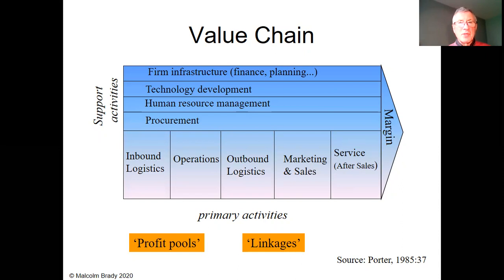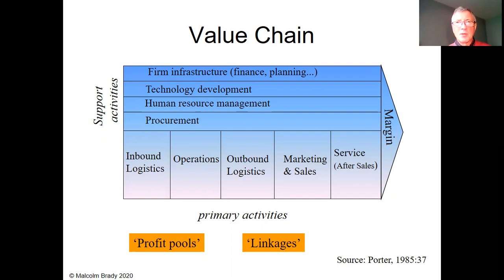So there are his support activities and his primary activities. He also mentions linkages — it's important to look not just at the individual sets of activities such as inbound logistics, but at the linkages between them: between inbound and operations, or between operations and outbound. Those linkages are critical. It's often the white space in the organization chart that is difficult to manage — each separate activity could be well managed within itself, but the connections between activities may not be.